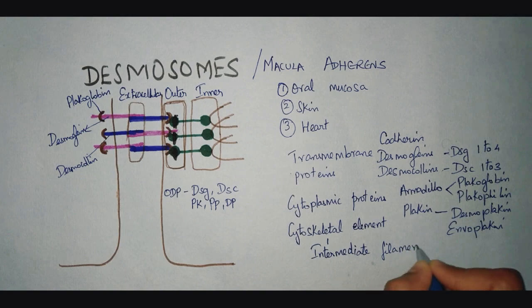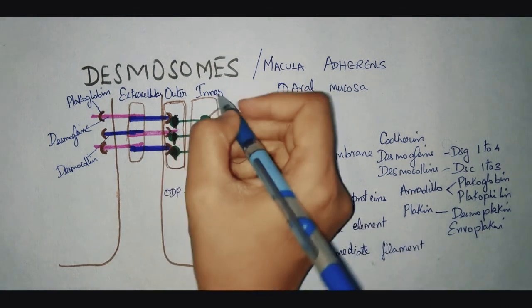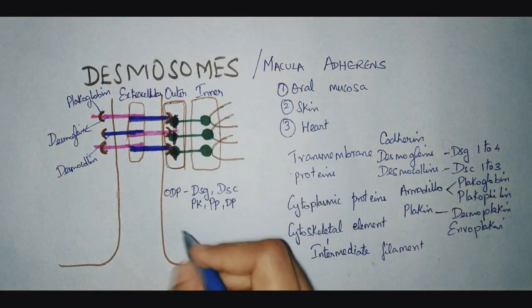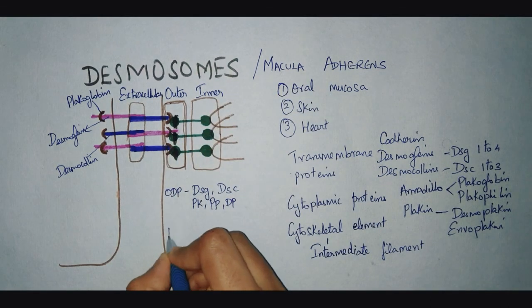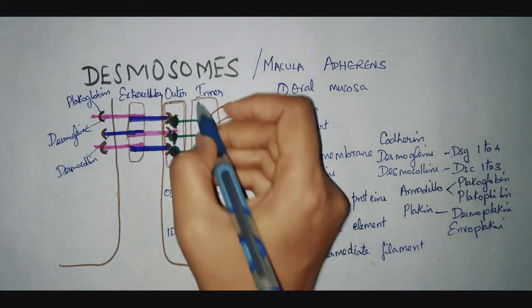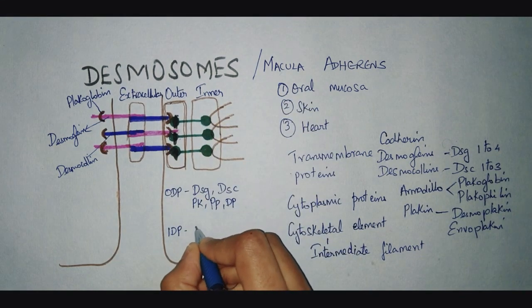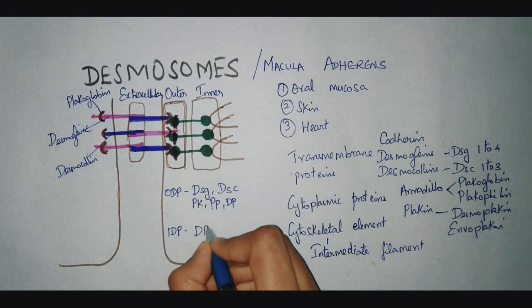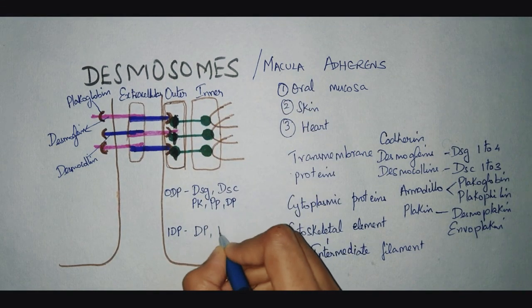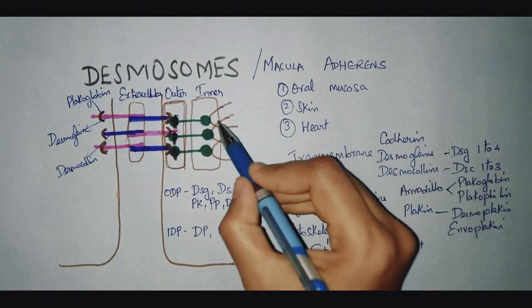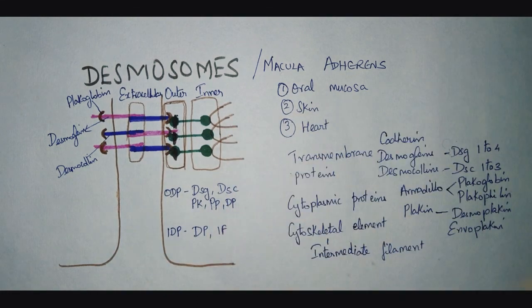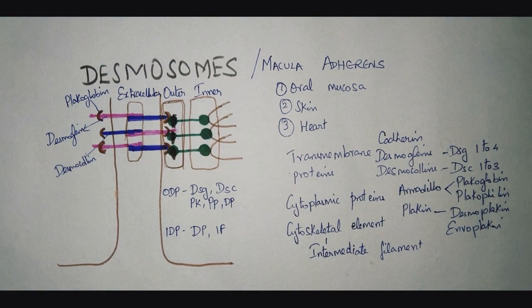The inner dense plaque is made of the desmoplakin and the intermediate filament. This is all about the structure of the desmosomes.